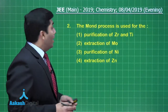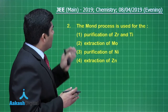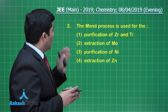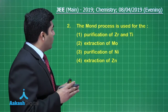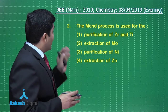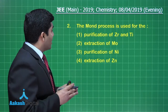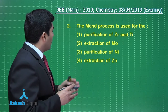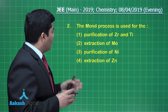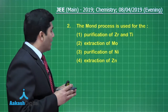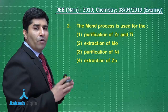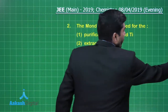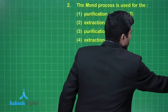In the next question, he is asking: the Mond process is used for — option one: purification of zirconium and titanium; option two: extraction of molybdenum; option three: purification of nickel; option four: extraction of zinc. First, we need to know what Mond's process is.